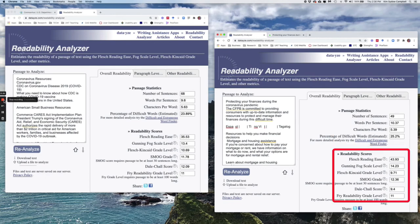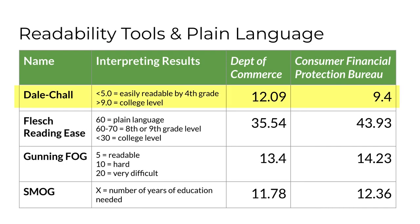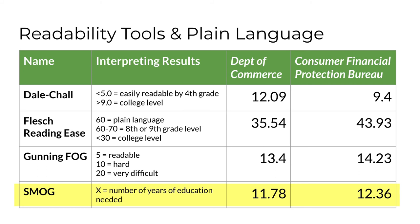Now let's compare four of the readability scores. We'll look at Dale-Chall first, because research has identified it as the most accurate. The Commerce material is assessed at well above college level. The CFPB is more readable, but also at a college level. Flesch Reading Ease assesses both at well below the level of plain language, but the CFPB site is more readable than the Commerce site. The Gunning Fog scores show that the two sites are both difficult, with the CFPB slightly less readable. Similarly, the SMOG scores show that both sites require around 12 years of education. All in all, neither government message is in plain language, but the CFPB material is a little better.